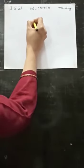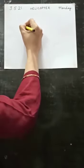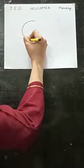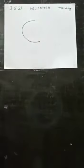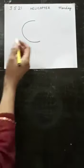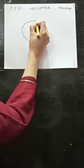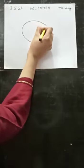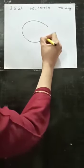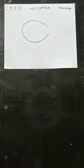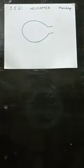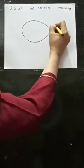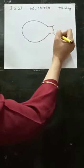First of all, you will draw here a big C like this. Now, from here, you will give a curving line. And from here also, you will give a curving line. Now, two sleeping lines. Here, you will make a cloud like this.